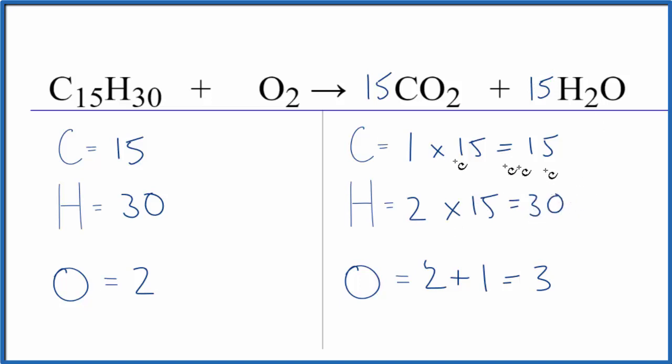So those are balanced, and we need to update these oxygens, because those have now changed. So we have 15 times 2, that's 30, plus 15 times 1, that's 15. So we have 45 oxygen atoms.